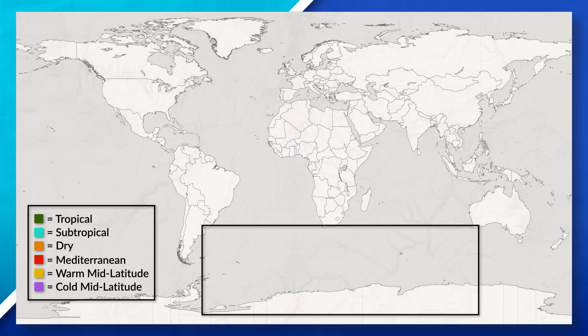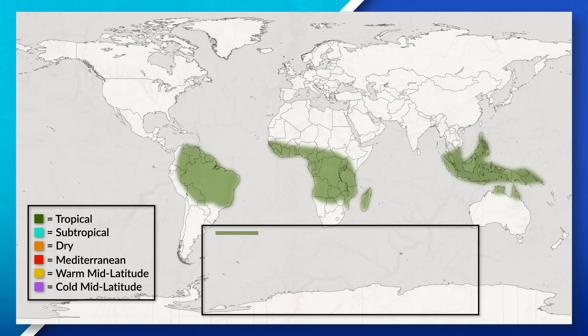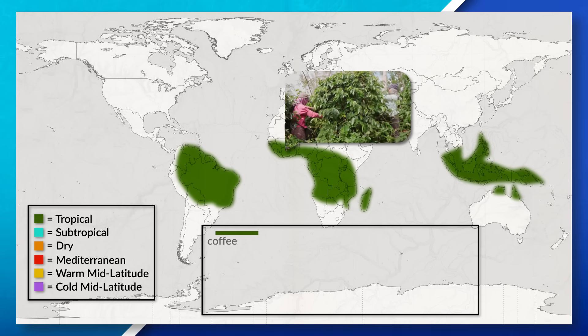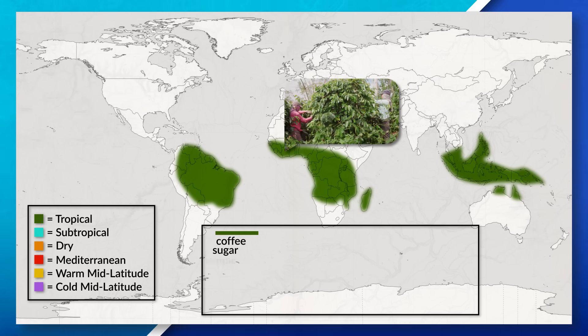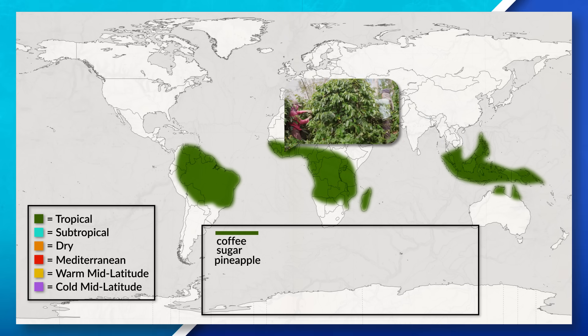We could look at tropical climates such as in Indonesia or countries in Africa near the equator, where we'll see the production of coffee, sugar, or pineapple.